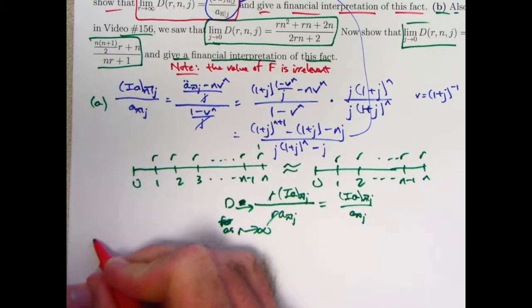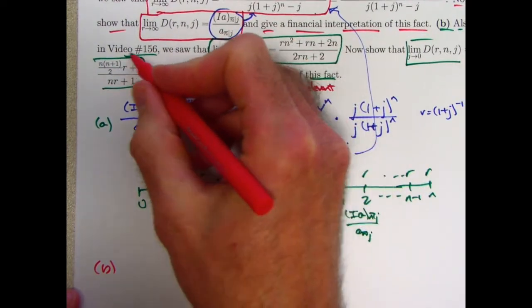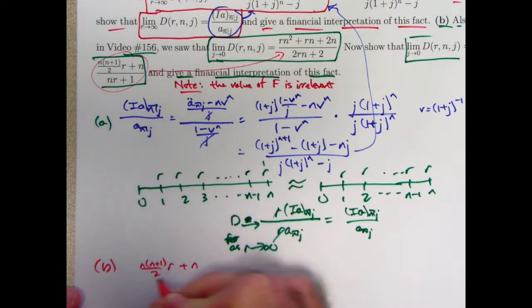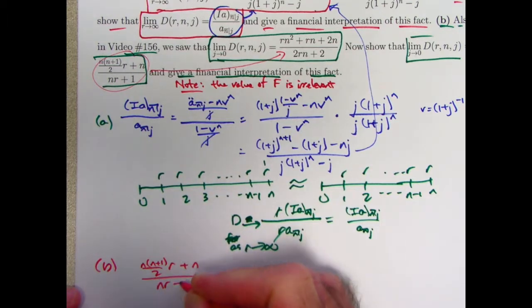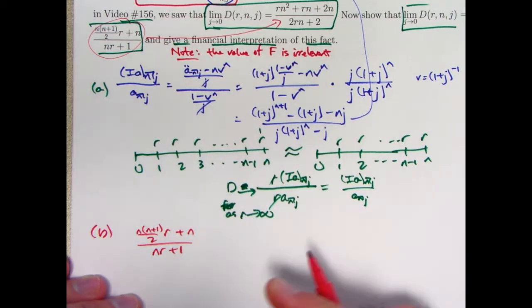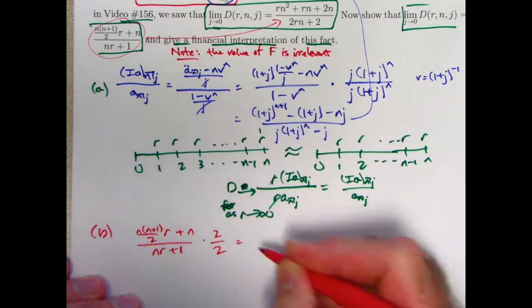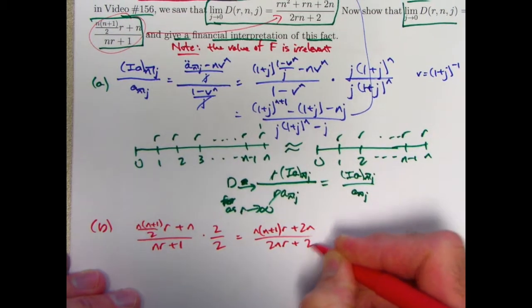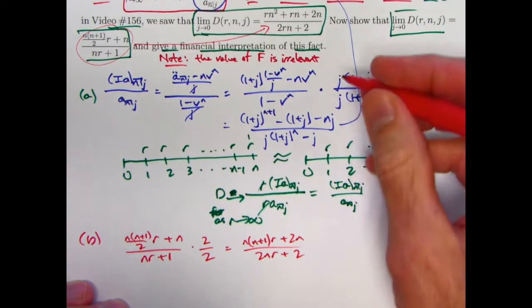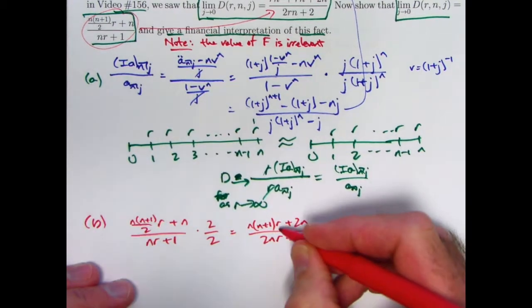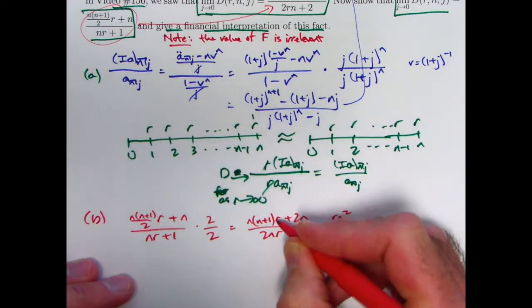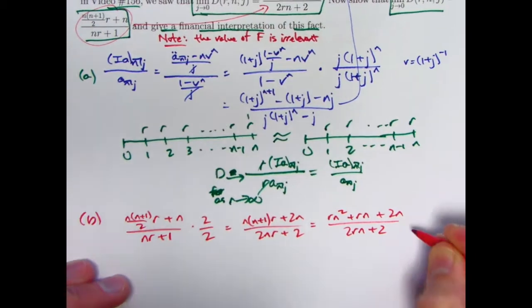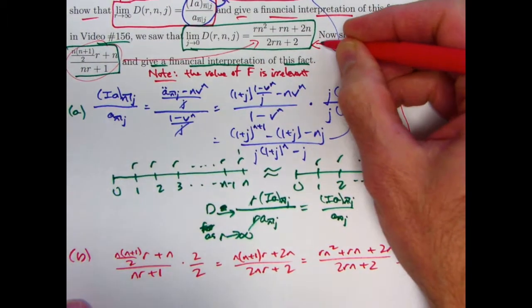On to part B. Start again algebraically. Let's show this equals this, and that's pretty easy to do. All you need to do is multiply the top and the bottom of this expression by 2, and expand it out, and you'll be done. So multiply the top and the bottom by 2. 2's cancel there. You get n times (n+1), r plus 2n. On the bottom you get 2nr plus 2. And now expand it out, and maybe do a little rearranging for good measure. If you like, put the r's before the n's. Expand this out. I get n² times r, or rn², plus n times r times 1, or rn, plus 2n, over 2rn plus 2. That is the same thing as what we got in that last video, video 156. So that's a brief algebraic verification.